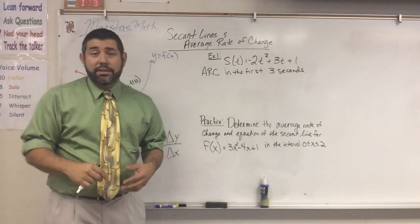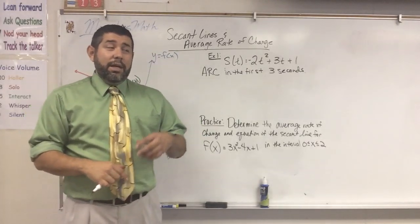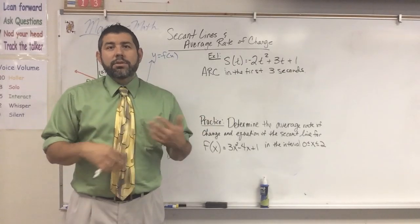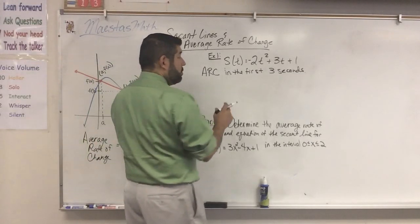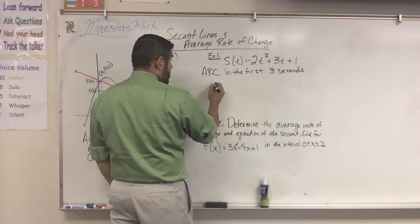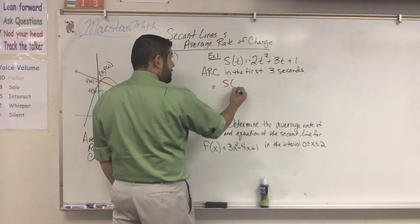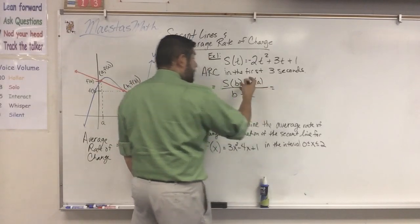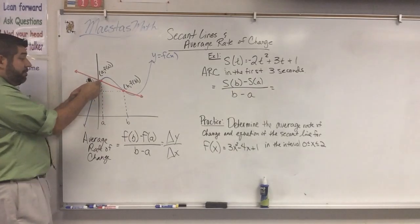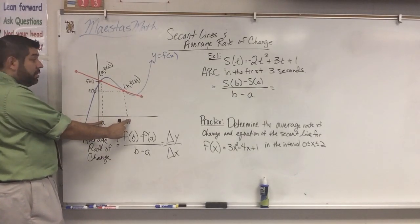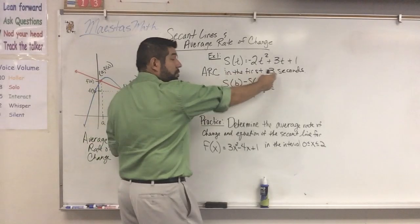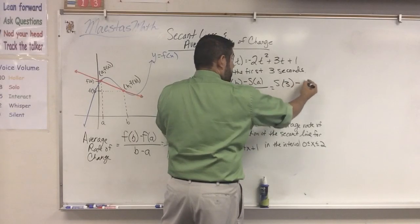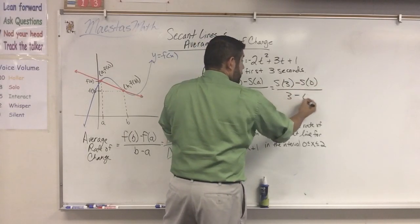Sometimes if we're dealing with position — you'll find this if you take physics — the average rate of change of position is velocity. So we're talking about average velocity here. We're going to use the formula: S of B minus S of A over B minus A. B is the one we're ending with, so we're going from zero to three seconds. So S of B is going to be S of three minus S of zero over three minus zero.